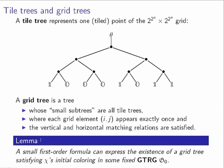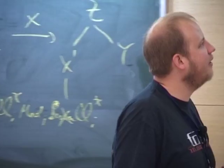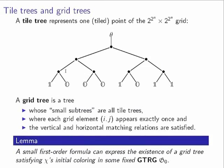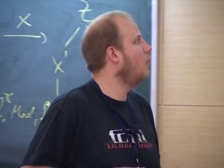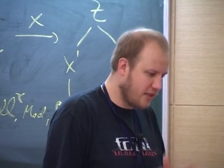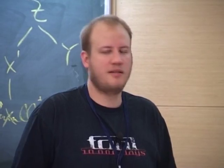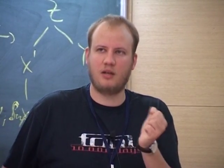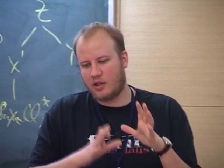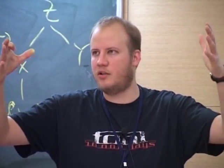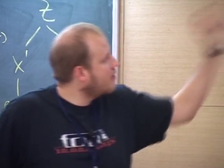A lemma shows that over a fixed ground tree rewrite system — which basically modifies small subtrees of a tile tree — one can construct a first-order formula of moderate size that expresses the existence of a grid tree satisfying the initial coloring. Asking whether the initial coloring can be extended to a bigger coloring just boils down to asking for the existence of such a grid tree.